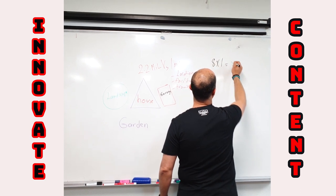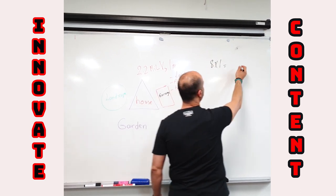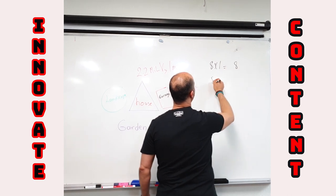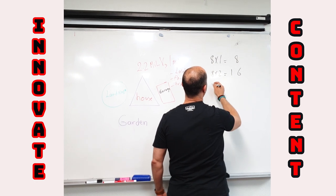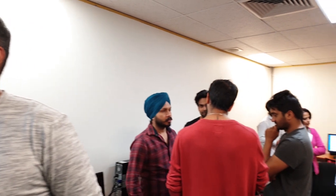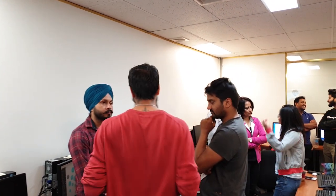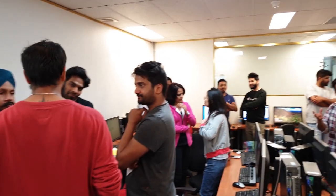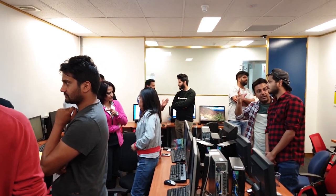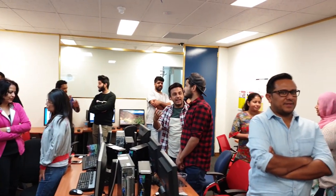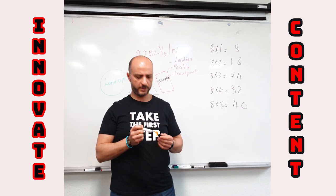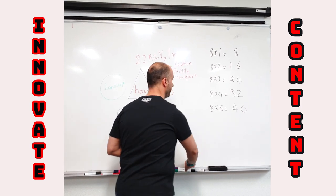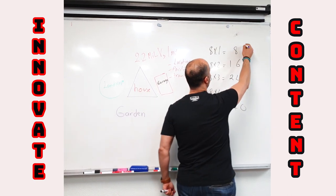Let's look at a multiplication table. We've got 8 times 1 equals 8, 8 times 2 equals 16, 8 times 3 equals 24, 8 times 4 equals 32, 8 times 5 — we've all said this at school, correct? Now you're thinking, oh, that's kind of weird — what is he talking about? All right, let me show you something interesting.